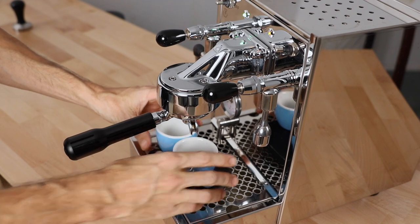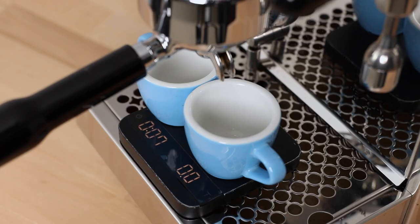You do miss those subtle things on the BZ10 like a shot timer, but with a good set of espresso scales, this is usually included.